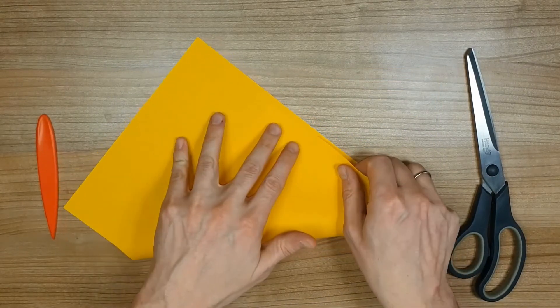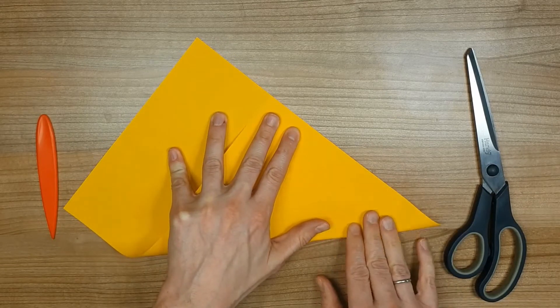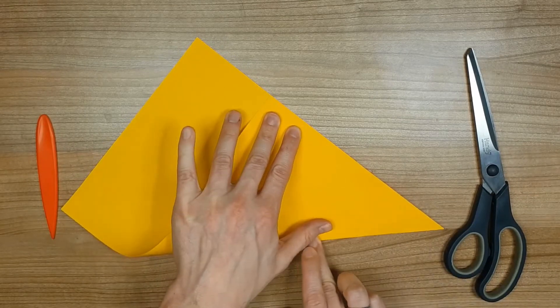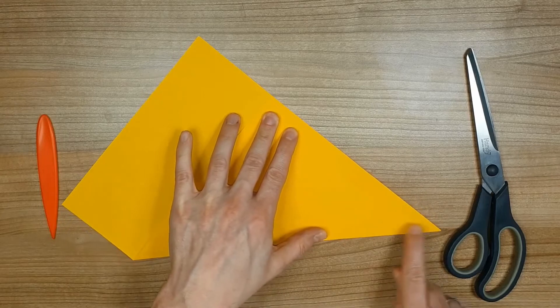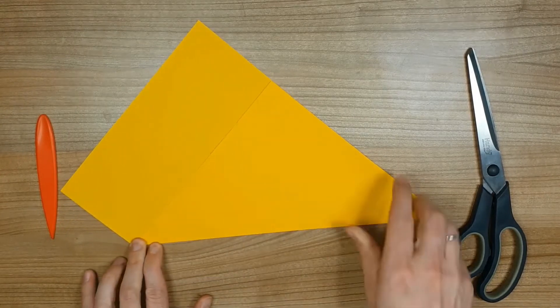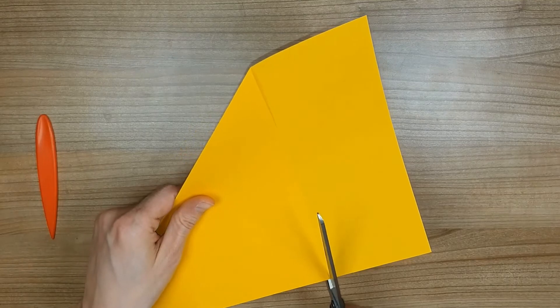If you do not have a square paper you can make one out of an A4 or US letter paper like this. For a star a yellow paper is nice of course but you can use any color you like.